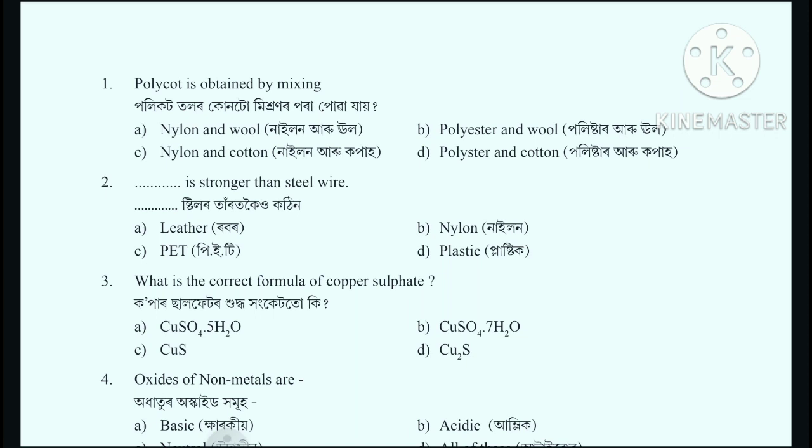What is the correct formula of Copper Sulphate? Copper Sulphate - the answer is option A: Copper Sulphate 5 times H2O.